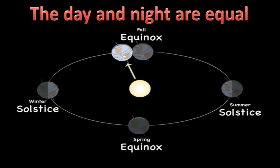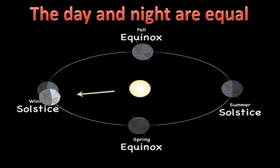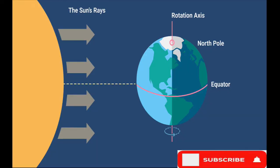When day and night are equal, it is called equinox. That falls twice in a year. Winter solstice occurs on 21st December.